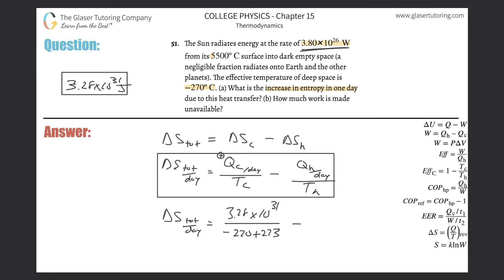So now this is going to be the heat lost by the sun is 3.28 times 10 to the 31st. It's the same value, because whatever is gained by the deep space is lost by the sun divided by the temperature of that sun. So that's 550 degrees Celsius, but we need to add 273 to that to convert it into Kelvin. And now this is the total per day.